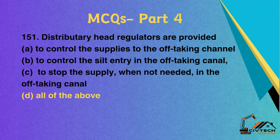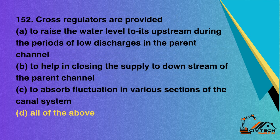Question 151: Distributary head regulators are provided — A. To control the supplies to the off-taking channel; B. To control the silt entry in the off-taking canal; C. To stop the supply when not needed in the off-taking canal; D. All of the above. Correct option: D. All of the above. Question 152: Cross regulators are provided — A. To raise the water level to its upstream during periods of low discharges in the parent channel; B. To help in closing the supply to downstream of the parent channel; C. To absorb fluctuation in various sections of the canal system; D. All of the above. Correct option: D. All of the above.